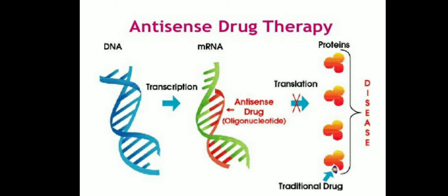In antisense therapy, the mechanism works as follows: DNA is transcribed into mRNA, but then mRNA cannot be translated into protein because the antisense molecule binds on to the mRNA. The antisense acts like a drug which binds to the mRNA and prevents translation into protein. In traditional drugs, the drug is designed to target the protein, not a specific DNA or RNA.